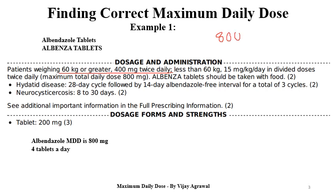Then for less than 60 kg body weight: 15 mg per kg in divided doses twice daily, maximum total daily dose 800 mg. So here also they have mentioned 800 mg. So for these tablets, 800 mg will be the total daily dose. And since tablet strength is 200 mg, 4 tablets per day is the maximum daily intake.